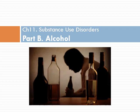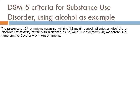We'll start with alcohol use and abuse. The DSM-5 has criteria for substance use disorder, and we've talked about the general criteria earlier, so now we'll talk specifically about those criteria using alcohol as an example.